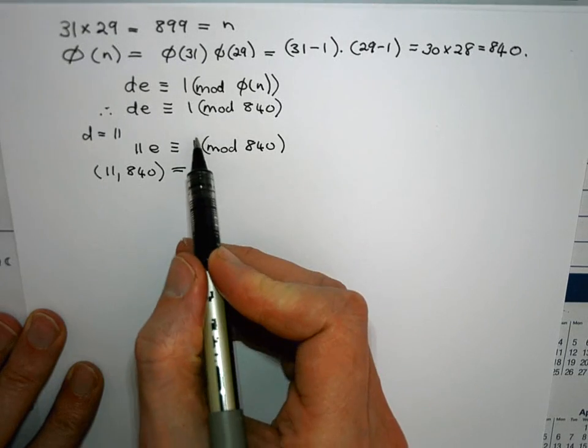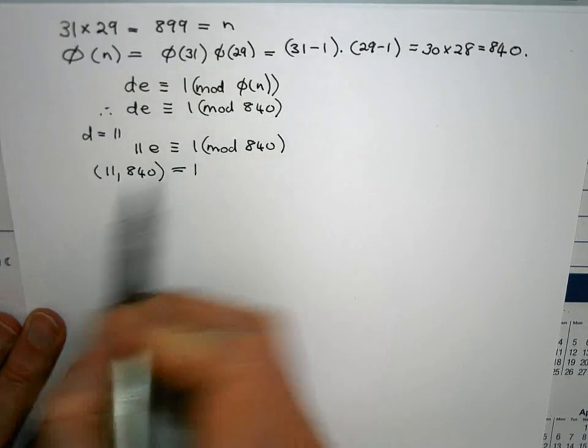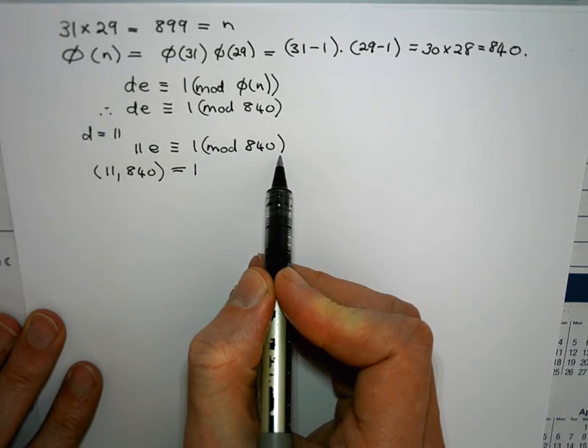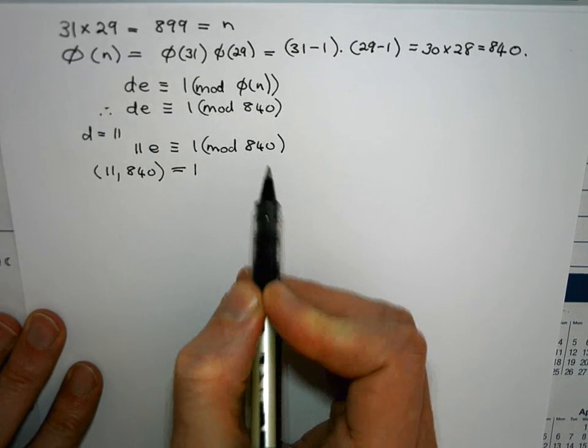And 1 of course divides 1 over there. And that's exactly what we need to happen for this linear congruence to have a solution. So this one does have a solution.